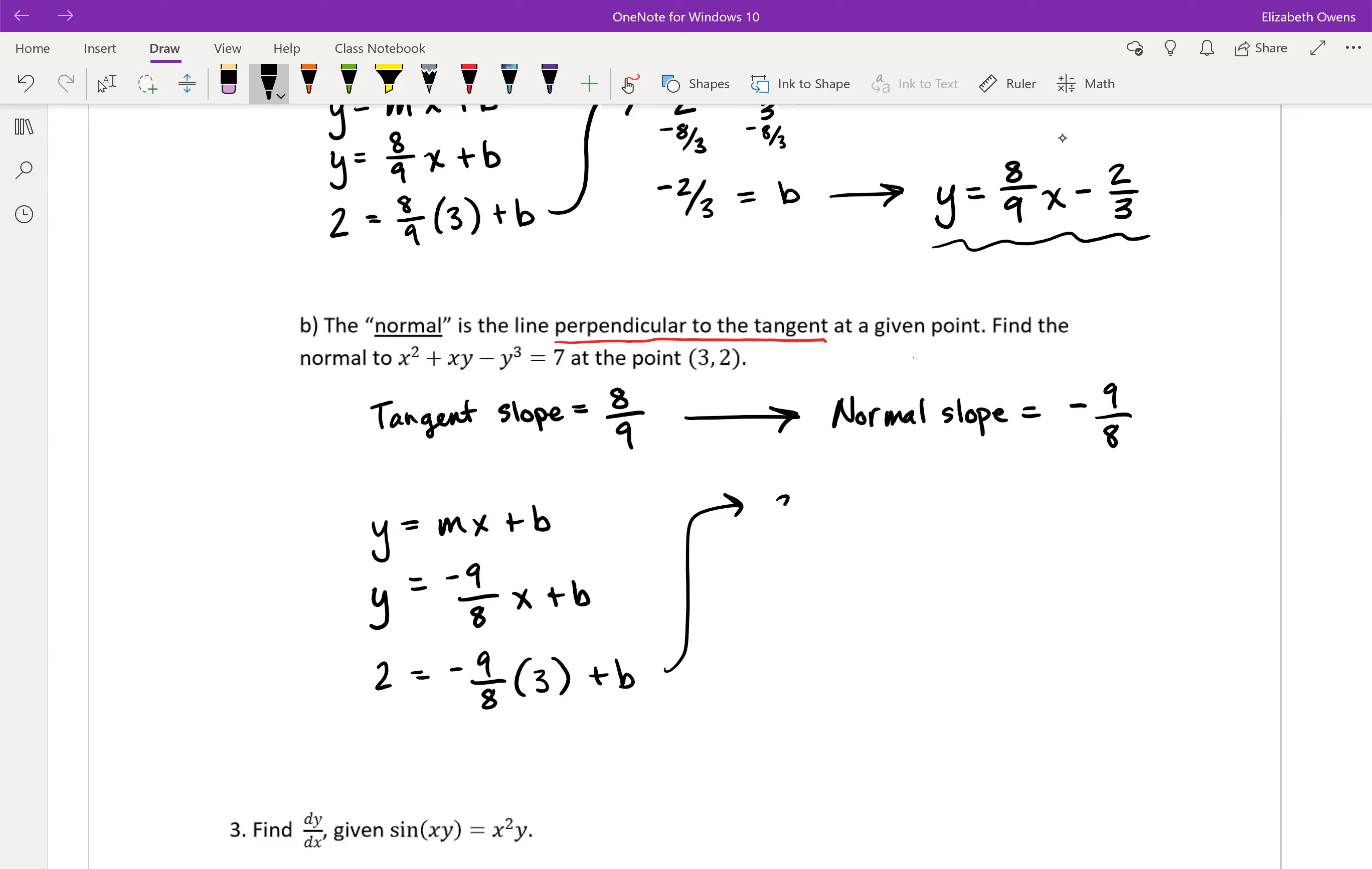So 2 equals, what would that be? -27/8 + b. We'd need to add that to both sides. So 2 here, that is 16/8, and we're adding 27/8. So that's going to be 43/8 for our b value.